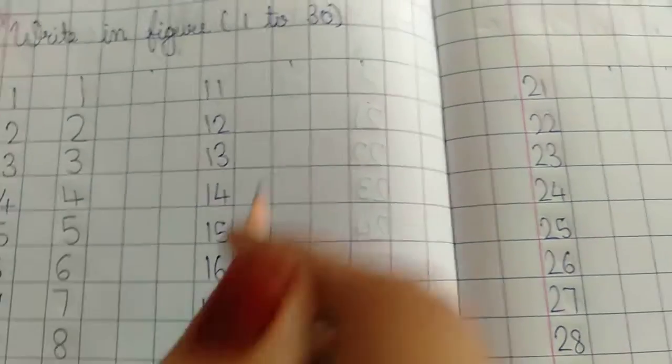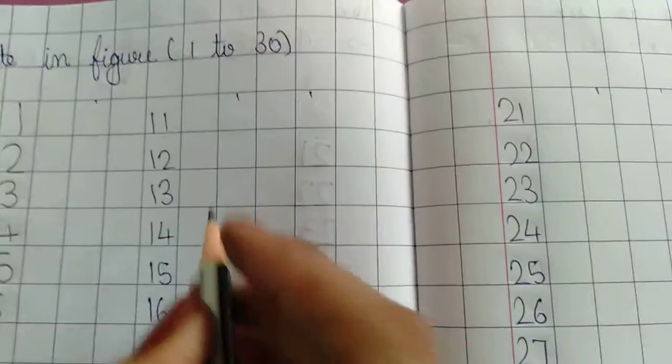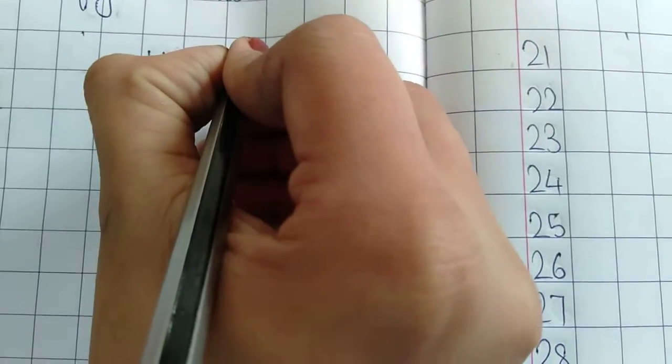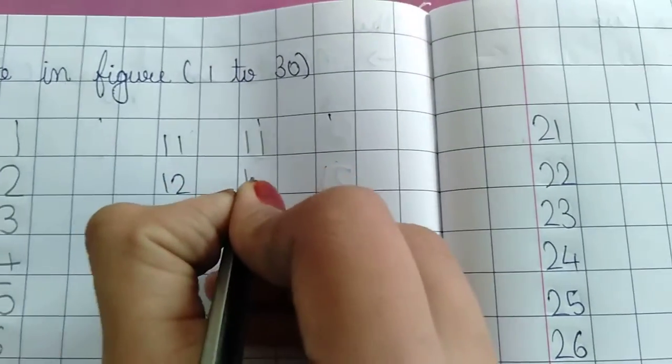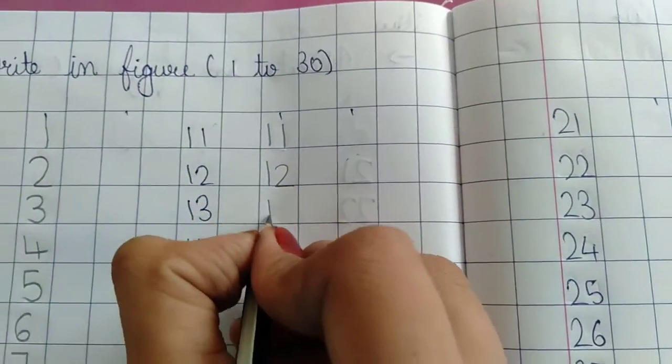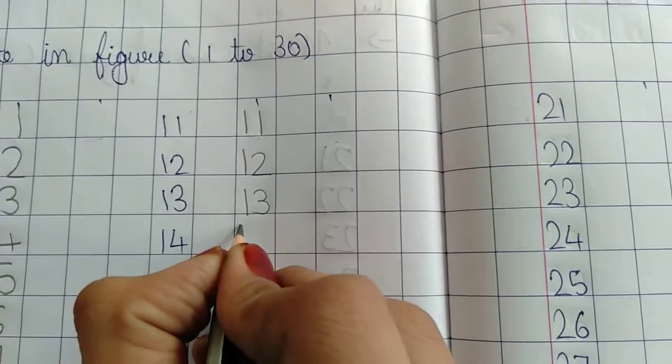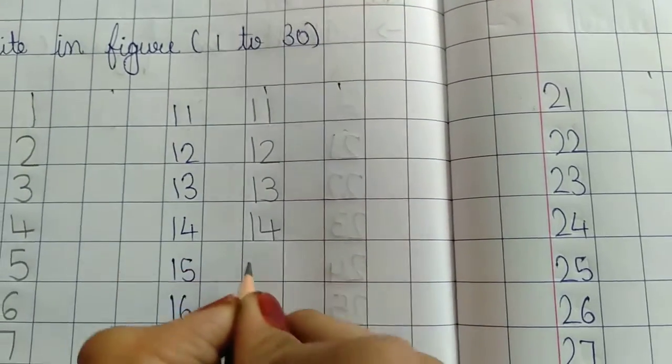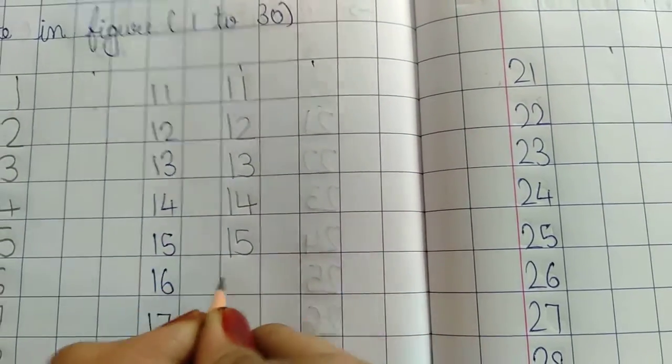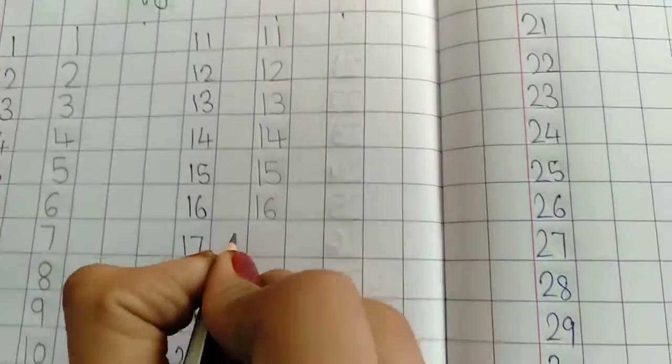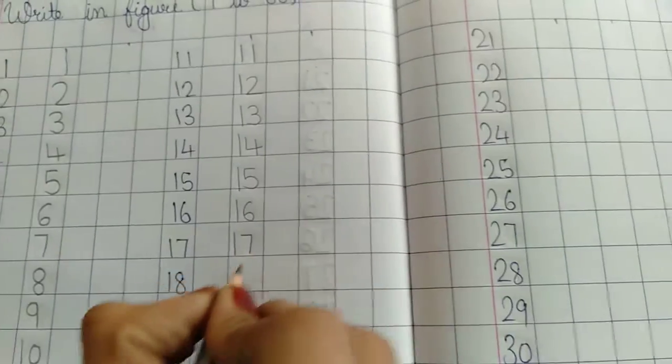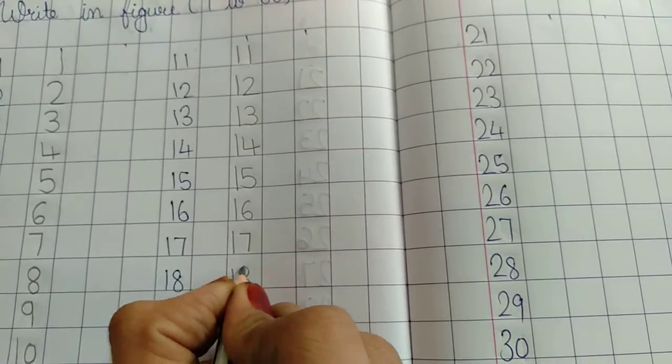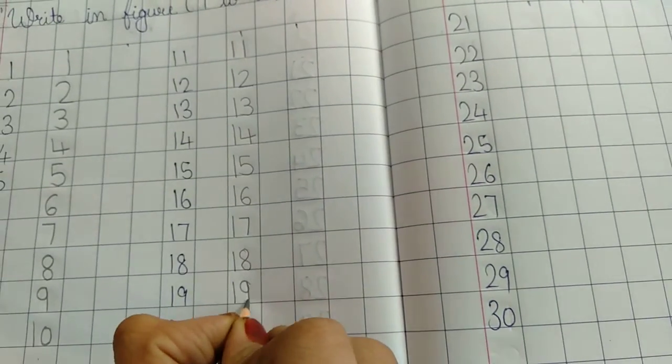After completing 1 to 10 two times, we will write 11 to 20. 1-1, 11. 1-2, 12. 1-3, 13. 1-4, 14. 1-5, 15. 1-6, 16. 1-7, 17. 1-8, 18. 1-9, 19.